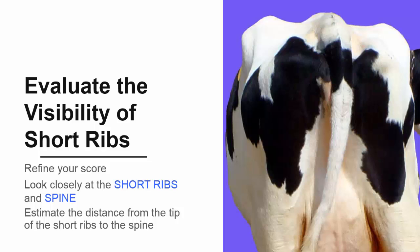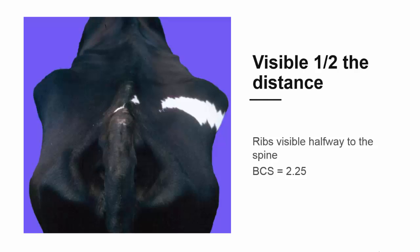The final decision to refine your score of less than 2.5 requires a close look at the short ribs and spine. Looking at the rear or top view of the cow, find the bony ridges of the short ribs and estimate the distance that these ridges are easily seen from the tip of the short ribs to the spine. Are the ridges visible half the distance, three-fourths of the distance, or more? If the ridges of the short ribs can be seen about half the distance to the spine, the cow's score is 2.25.